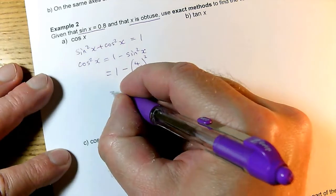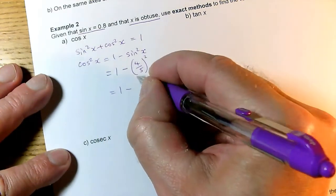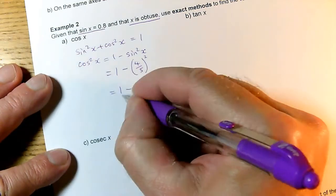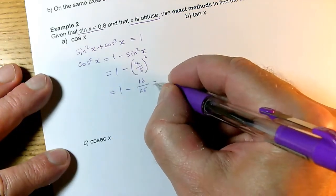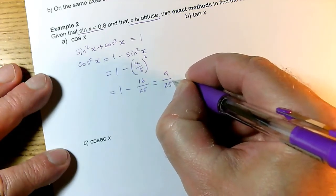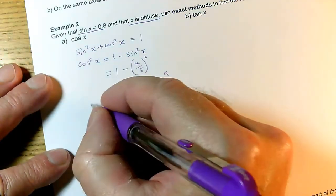So that's 1 minus... to square a fraction, I square the top to get 16, square the bottom to get 25. This is 25/25 minus 16/25, which gives 9/25. So that's cos²x.